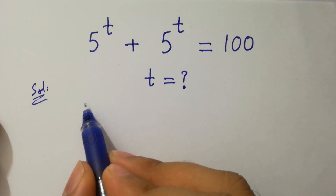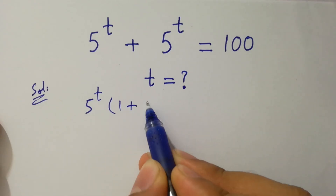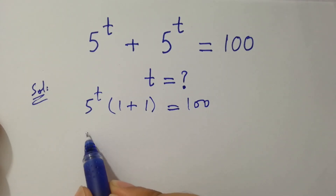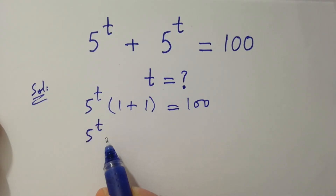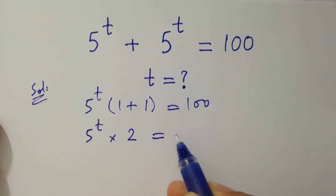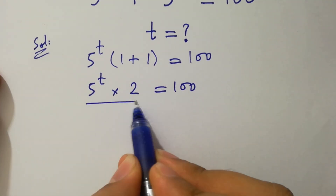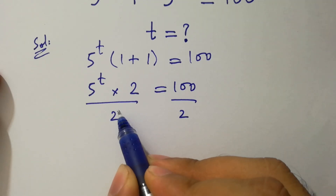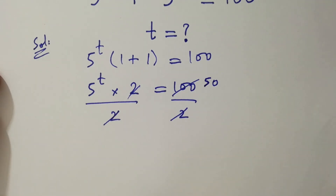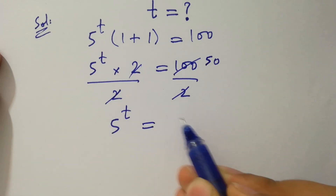We can factor out 5 to the power t. We have 5 to the power t times 1 plus 1, which is 2, equal to 100. Dividing both sides by 2, the 2s cancel and we get 5 to the power t equal to 50.